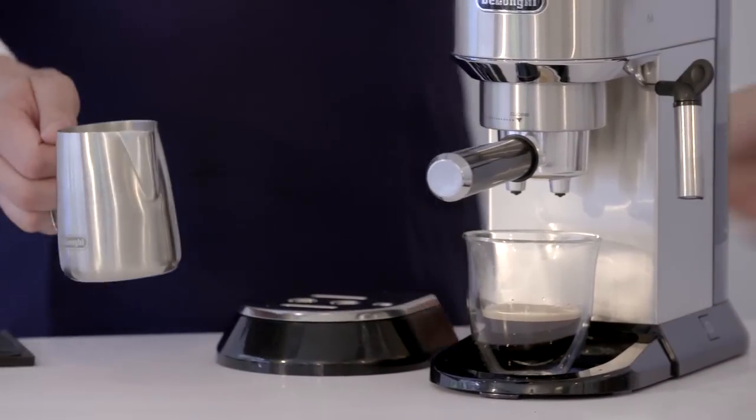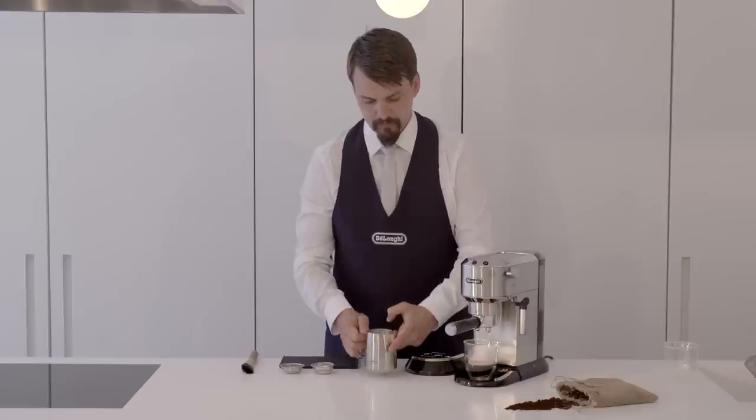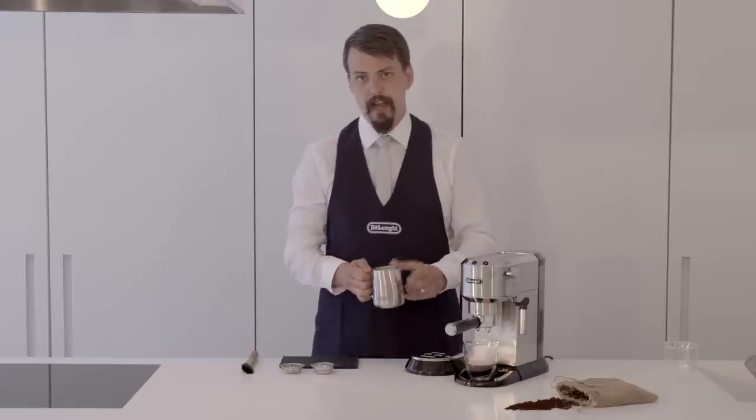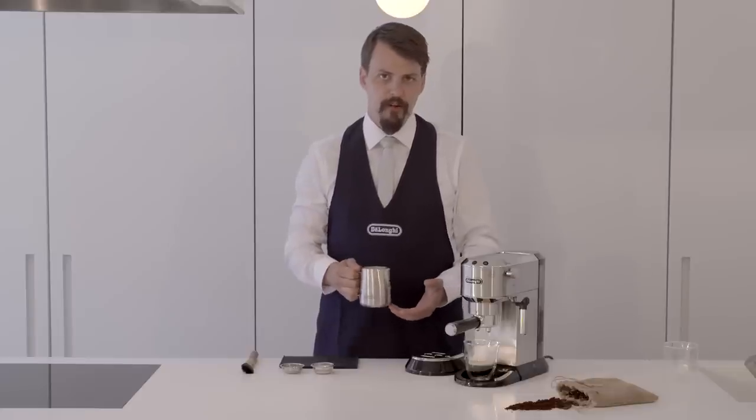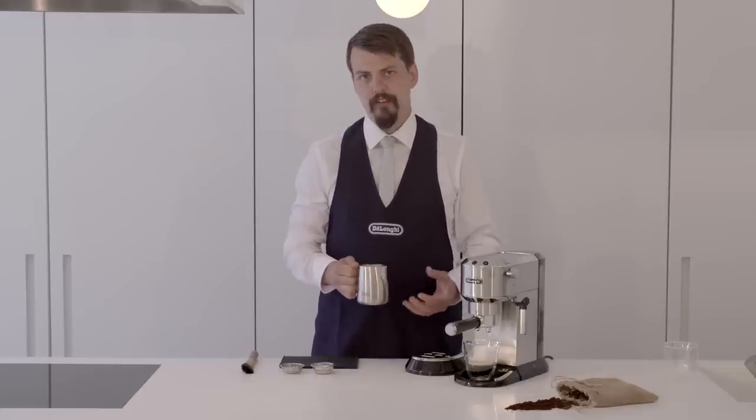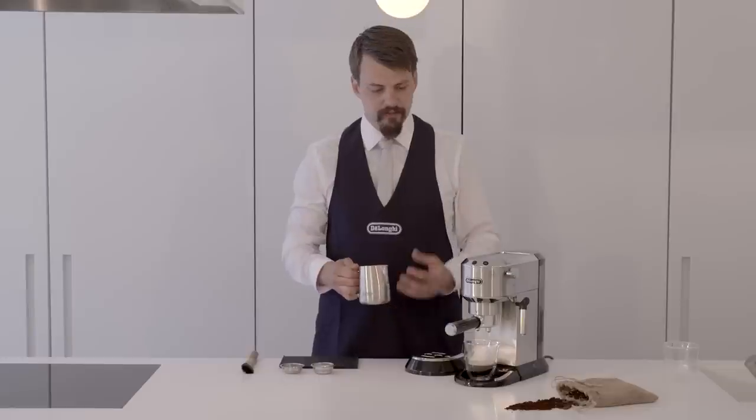We'll now tap our jug twice on the counter to reduce any big air bubbles in the milk and spin it. Baristas call this polishing the milk. It's really important to combine the foam with the milk to get a really even drink.